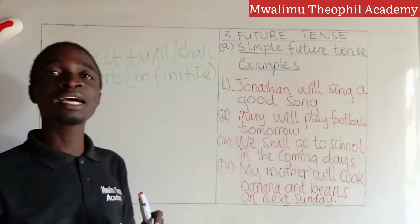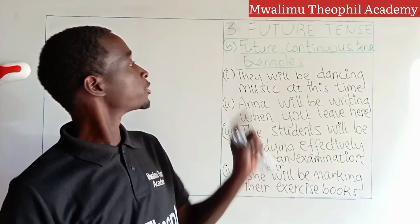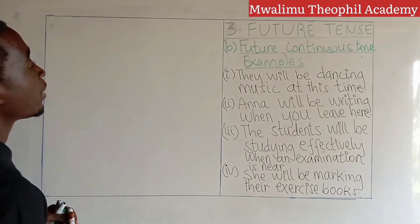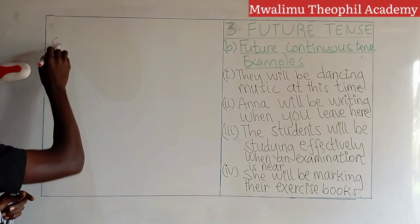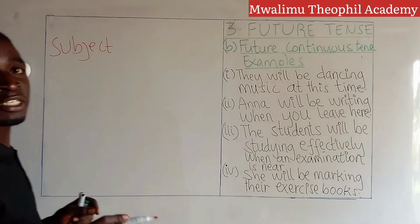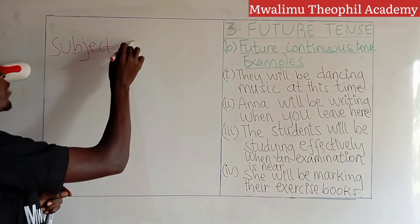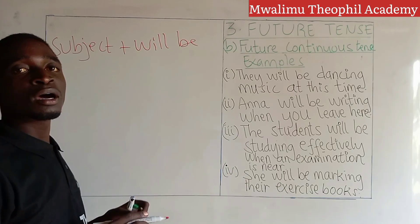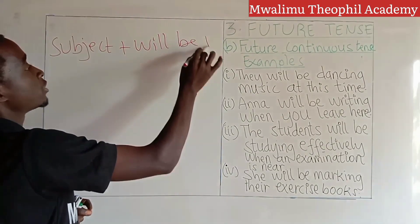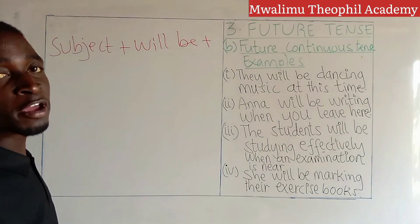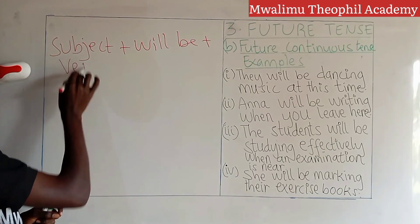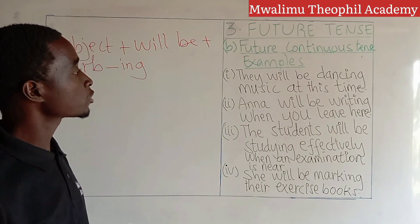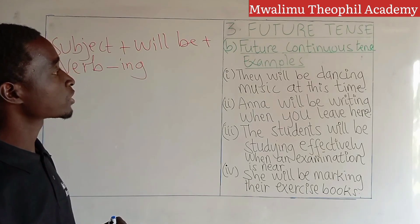After this first category, let us see the second category: future continuous tense. Any sentence in future continuous tense should obey the following law: start with a subject, followed by 'will be,' then the main verb ending with '-ing.' We have four sentences in future continuous tense as you see here.